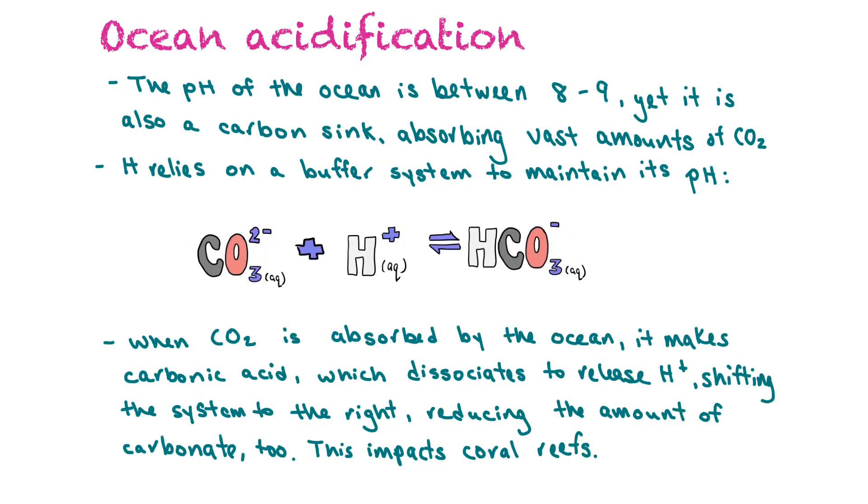In terms of ocean acidification, the pH of the ocean is between 8 and 9, but it's also a carbon sink so it absorbs vast amounts of carbon dioxide. To do so, it relies on a buffer system to maintain that pH around 7.8 to 9.